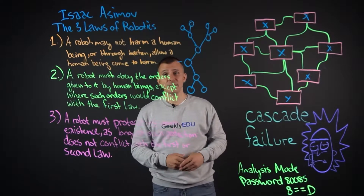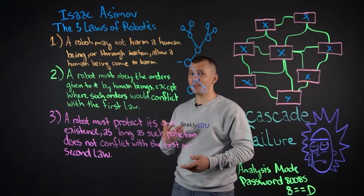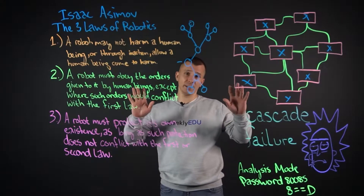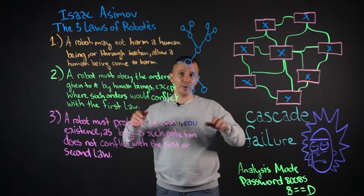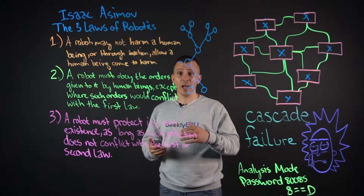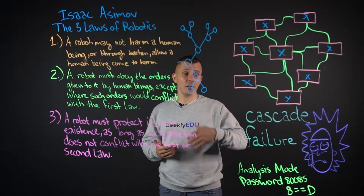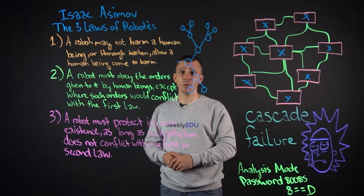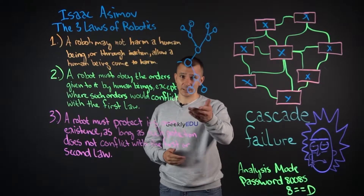Hi there, I'm David, and today we're going to talk about the Asimov cascade failure in Mortiplicity, Season 5, Episode 2 of Rick and Morty. Let's get started.